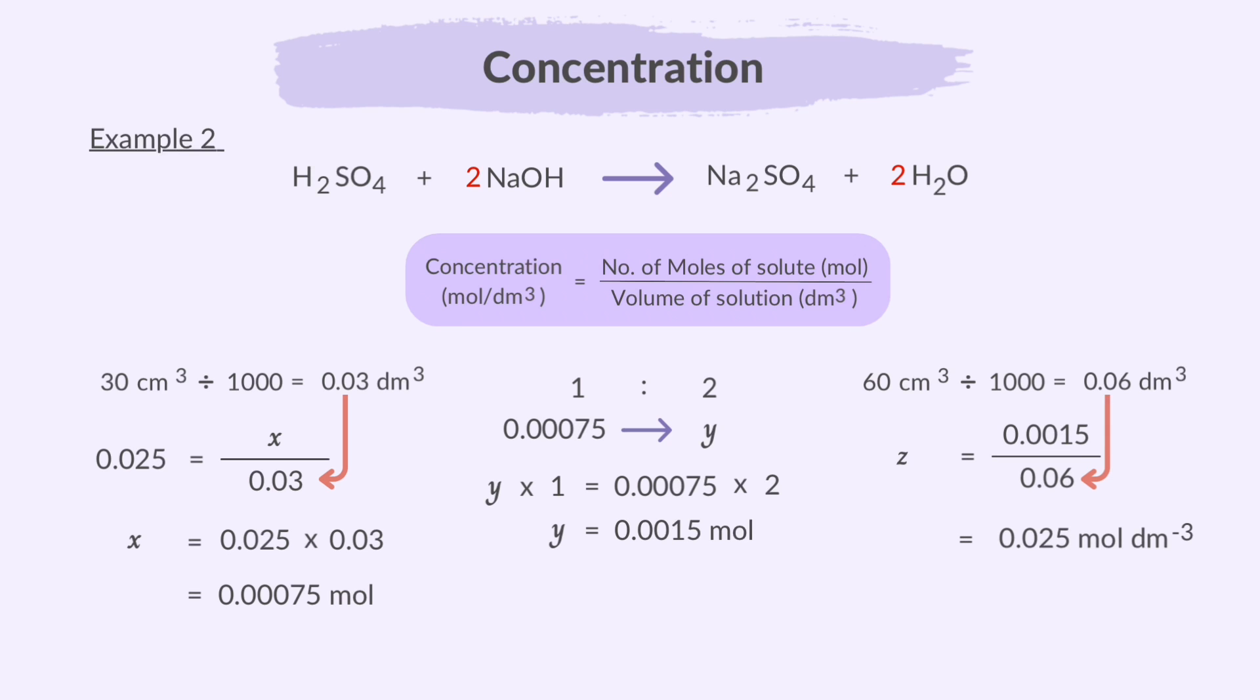Finally, we substitute the values of the number of moles and volume to arrive at the concentration of sodium hydroxide, which is 0.025 moles per dm cubed. That concludes part 5 of topic 3, stoichiometry.